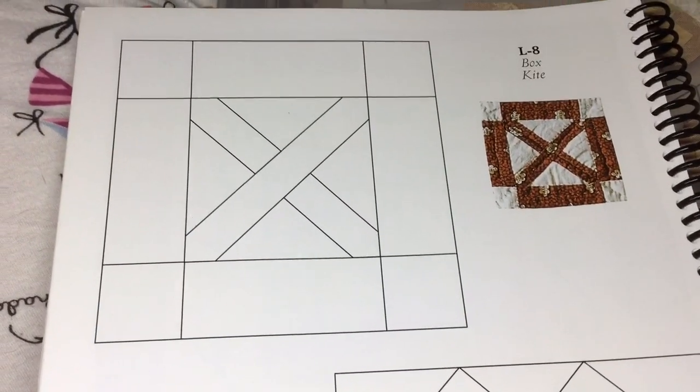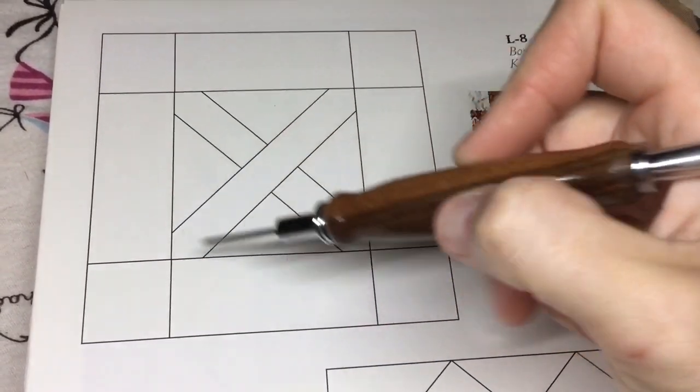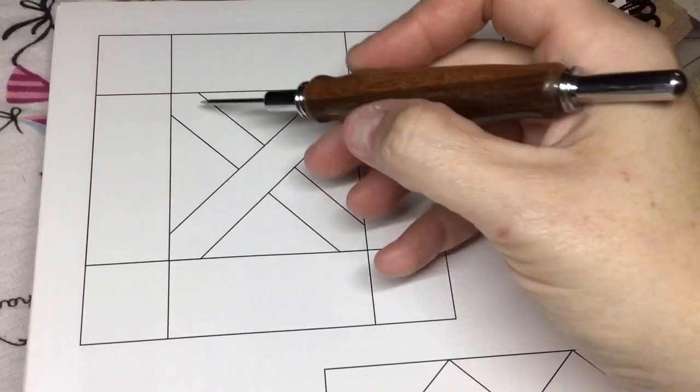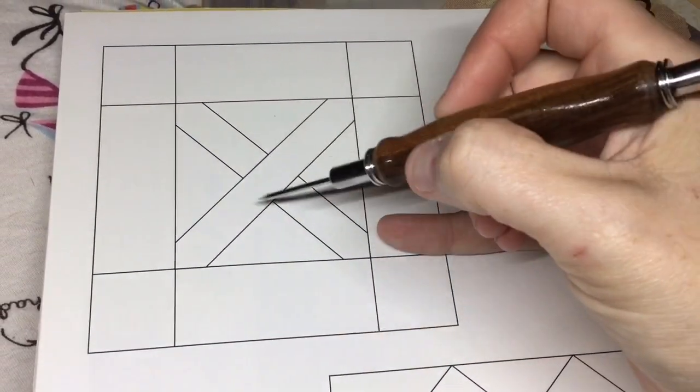L8 is the next block, and we have a center X section. Taking this center block into consideration, we're going to baste this entire piece.